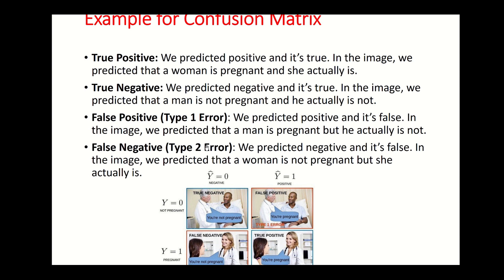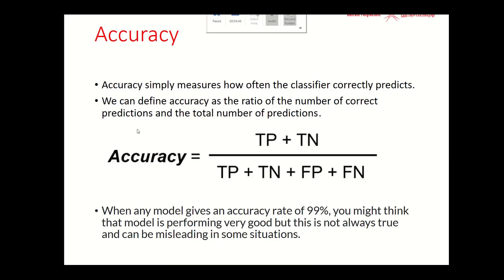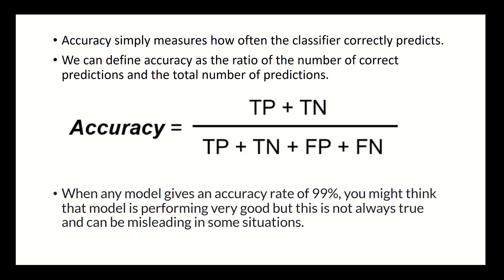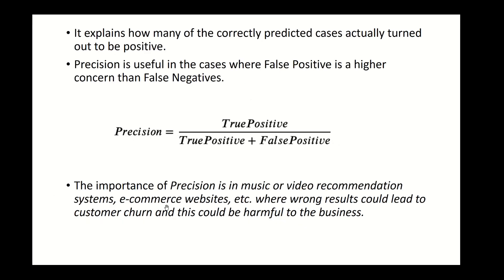Now that you understand the confusion matrix, let's look at how accuracy is calculated. Accuracy is calculated as true positives plus true negatives — all the truths — divided by the total data: true positives plus true negatives plus false positives plus false negatives.